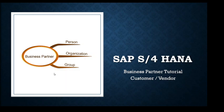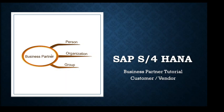As we can see, there's a mind map — a pictorial representation and simplification of a topic. Business Partner has three branches: a person, organization, and a group. A business partner can be created as a person, organization, or group. After that, we assign a role — for example, if we create a business partner as an organization and assign a customer role, it becomes a customer. If we assign a vendor role, it becomes a vendor. One business partner can be both a customer and vendor at the same time.